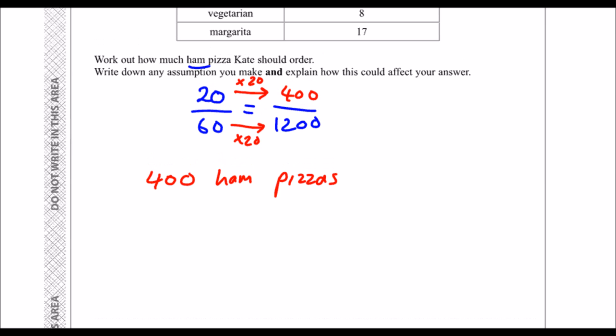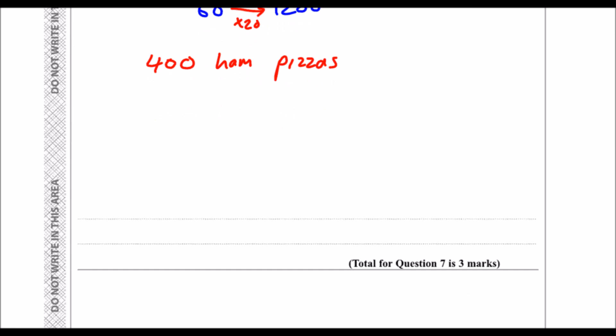Now write down any assumption you make and explain how this could affect your answer. So we've made a few assumptions here. We've assumed that everyone is going to the party, and if everyone didn't go to the party then she'd have to order fewer pizzas. We've assumed that they're going to have one pizza each. If they were going to have less than a pizza each she'd need fewer pizzas. Or we've assumed that her sample is representative of the whole school. So any of these answers is okay.